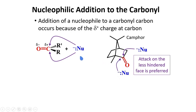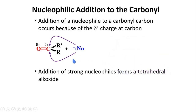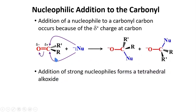If your nucleophile is strong, this will form a tetrahedral alkoxide on the attack. And if the R groups are different, the carbonyl carbon will become a chiral center. However, because of the equal chance of attack at the bottom and the top, the products will likely be a racemic mixture.